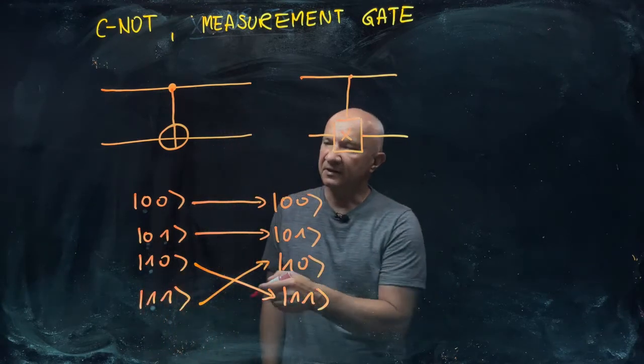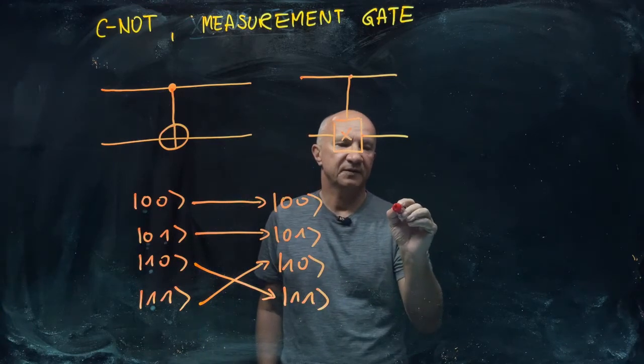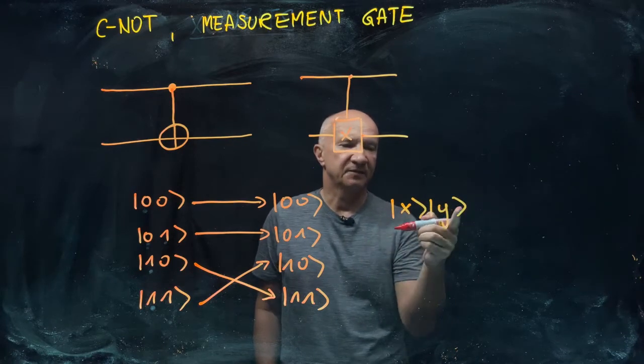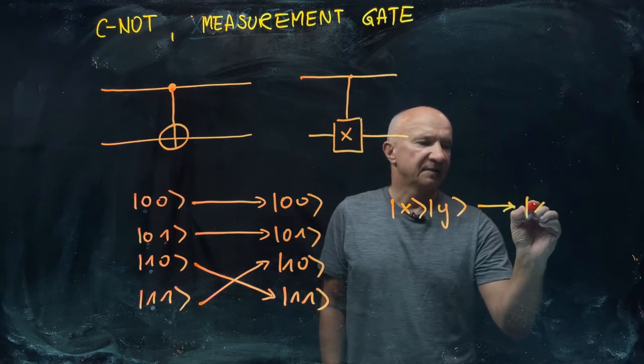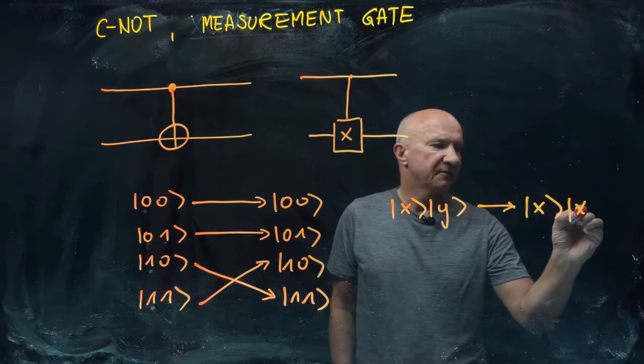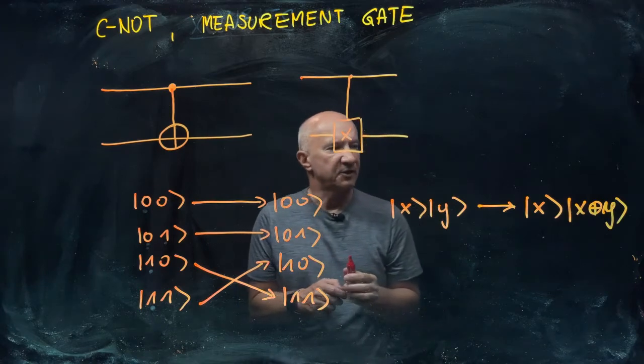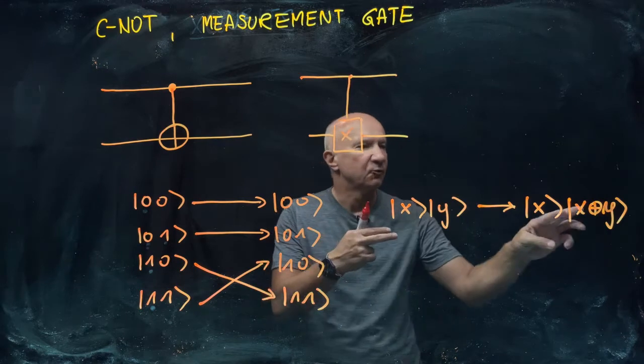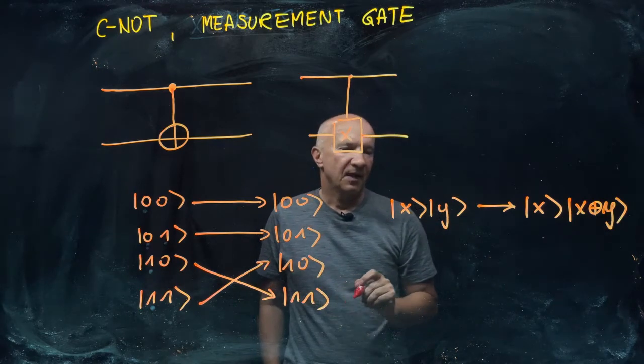There are other ways of writing this. You can write it as follows: state |x,y⟩, where x and y are either zero or one, is mapped into state |x, x⊕y⟩. You see x always survives, and here you have x plus y—that's binary addition, exclusive-or. So that means one plus one is zero in this case.